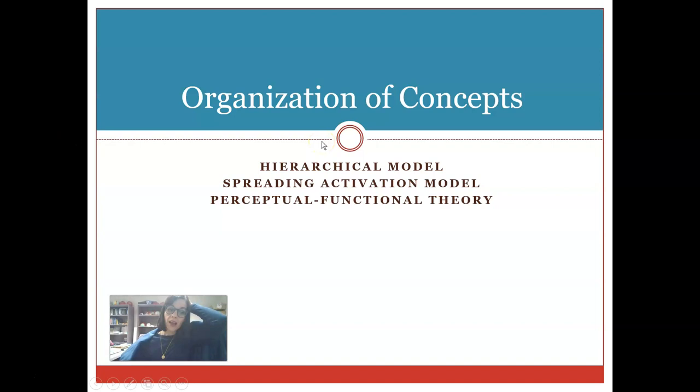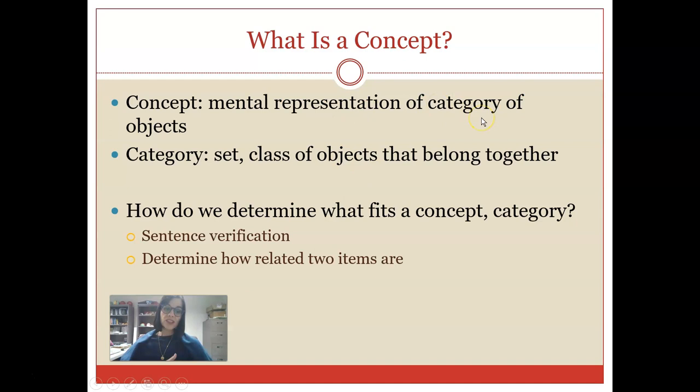We're going to start by talking about how different types of concepts are organized in memory and in mind. In particular, we're going to talk about three different types of models: the hierarchical model, the spreading activation model, and something known as perceptual functional theory. First of all, what is a concept? A concept is a mental representation, how we tend to think about a category of object. What does it mean to be a dog? What does it mean to be a teacher?